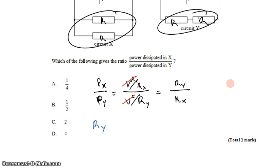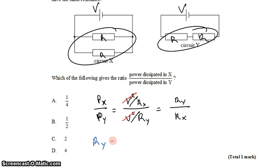For resistance Y, it's pretty straightforward because Y is a series circuit. It's just the sum of the two resistors, and that'll be 2R.